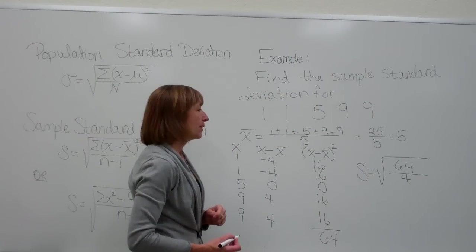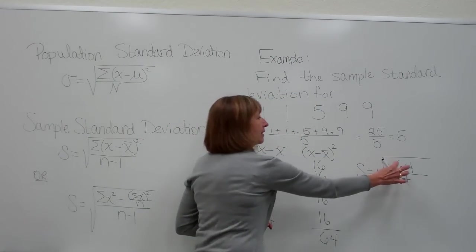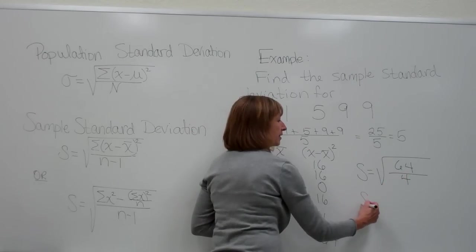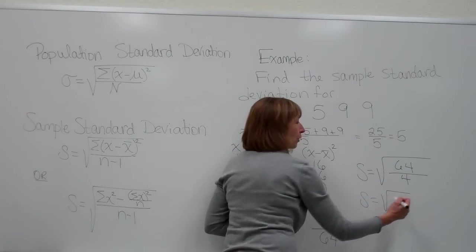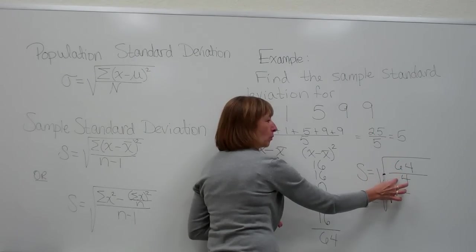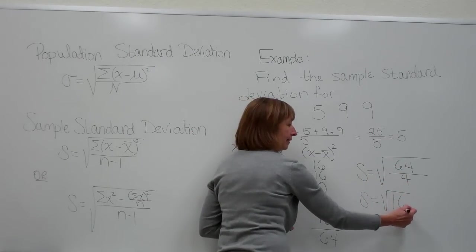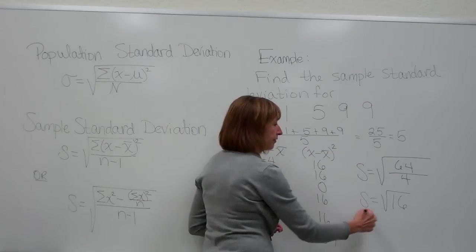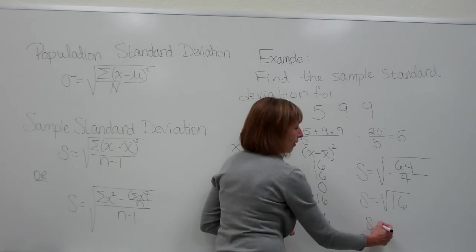So now when I look at doing the quotient, I have the square root of, well 64 divide by 4 is 16. And the square root of 16 is 4.